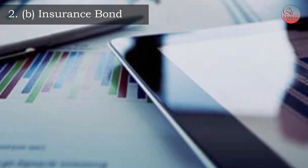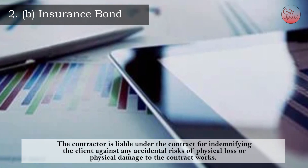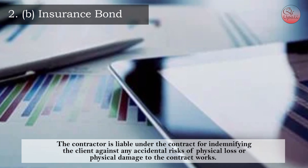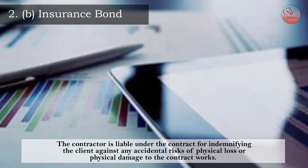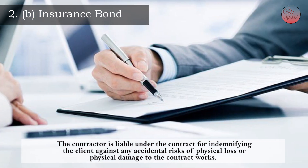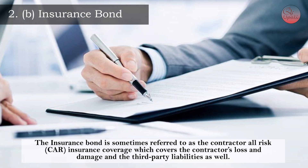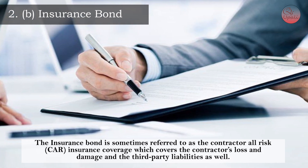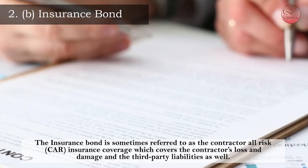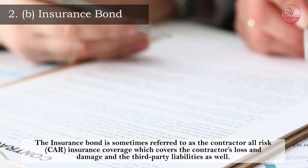B) Insurance Bond. The contractor is liable under the contract for indemnifying the client against any accidental risk of physical loss or physical damage to the contractor's work. The insurance bond is sometimes referred to as the contractor's all-risk (CAR) insurance coverage, which covers the contractor's loss and damage and third-party liabilities as well.